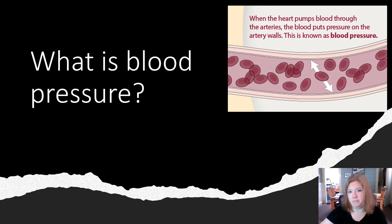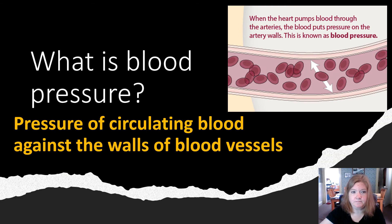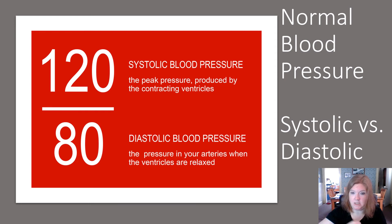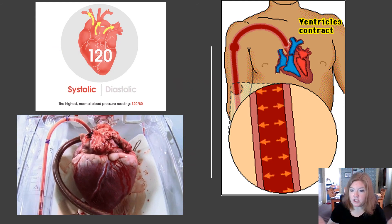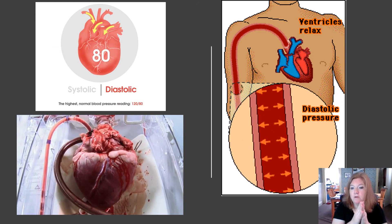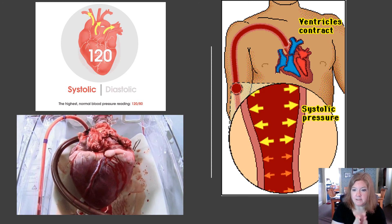What is blood pressure? When the ventricles contract, the blood puts pressure on the walls of the artery — that's blood pressure. It's the pressure of circulating blood against the walls of the blood vessels, in relation to the pumping of the heart. Normal blood pressure is 120 over 80. Systolic is during ventricle contraction; diastolic is during ventricle relaxation.